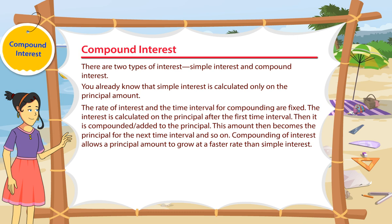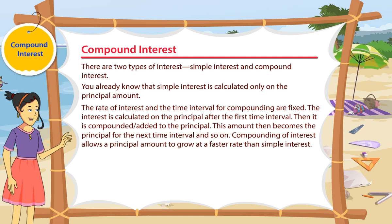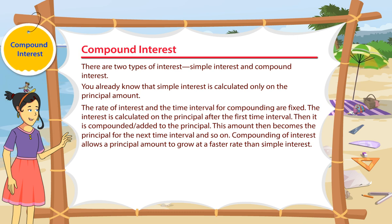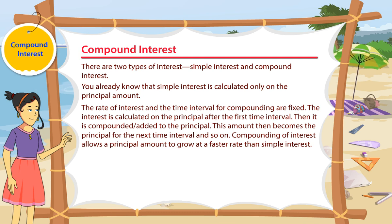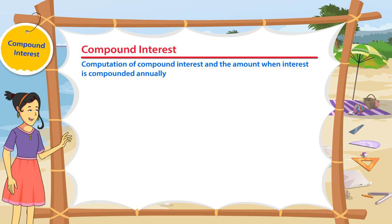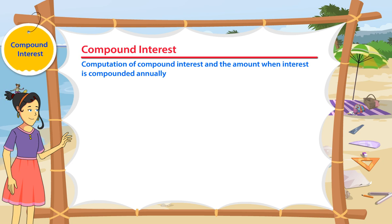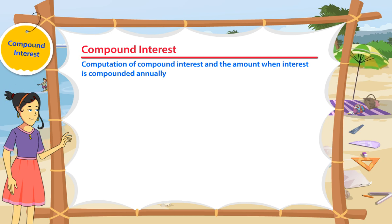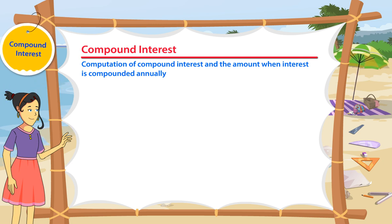Compounding of interest allows the principal amount to grow at a faster rate than simple interest. Now let's look at the computation of compound interest and the amount when interest is compounded annually.